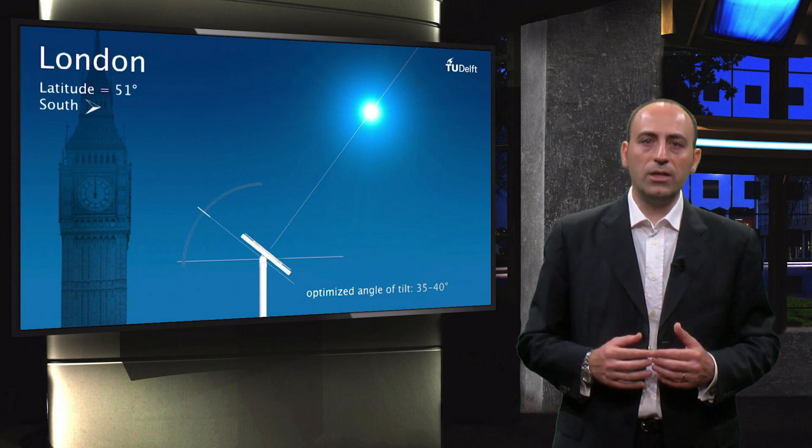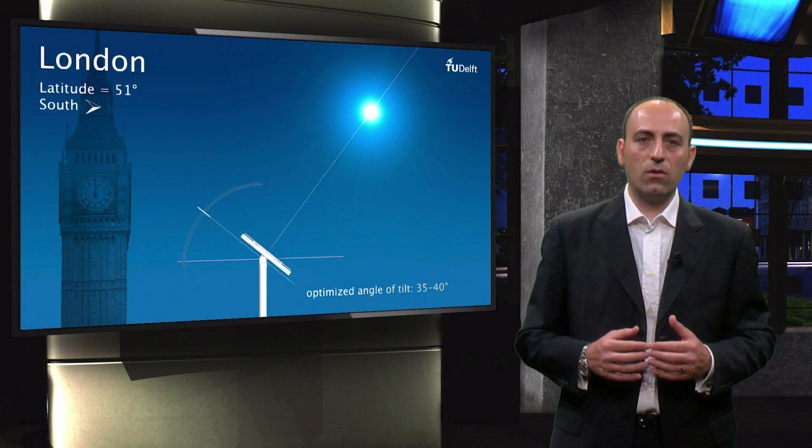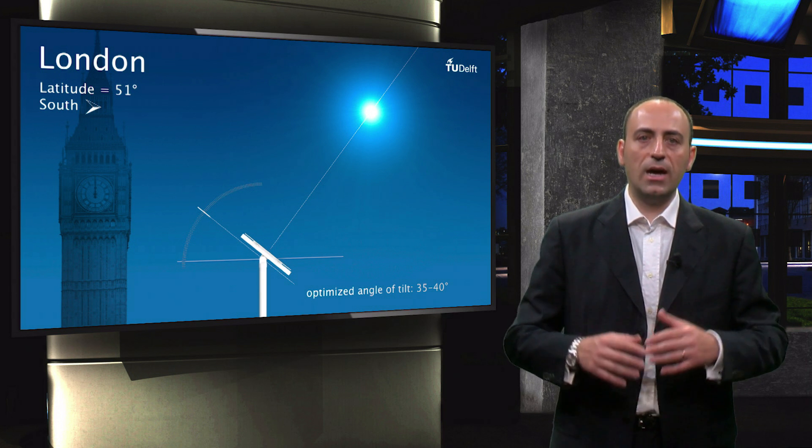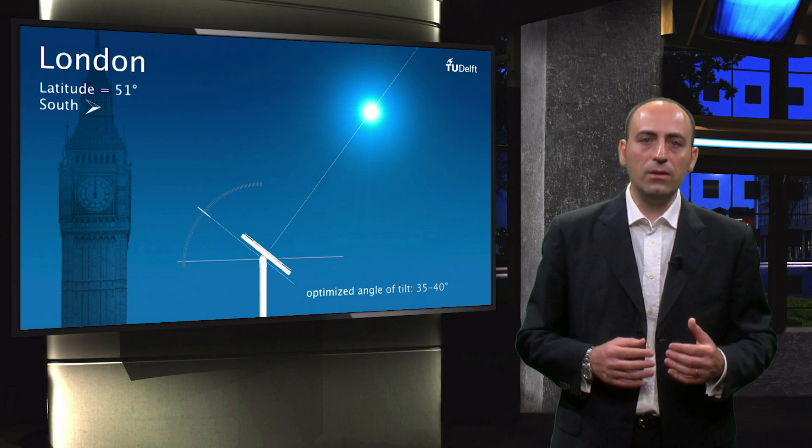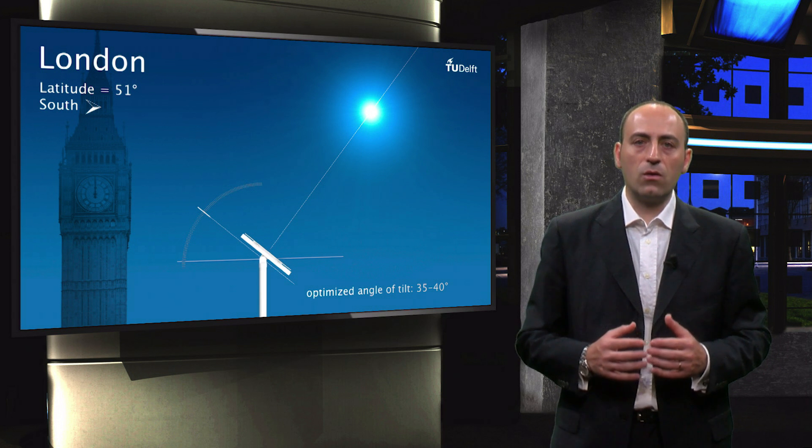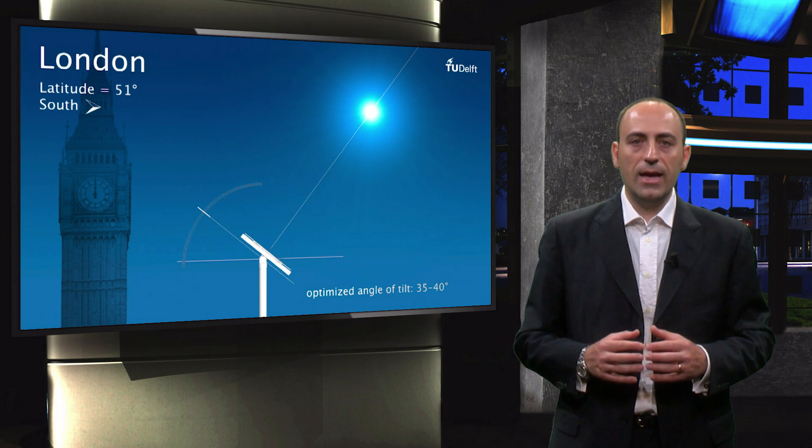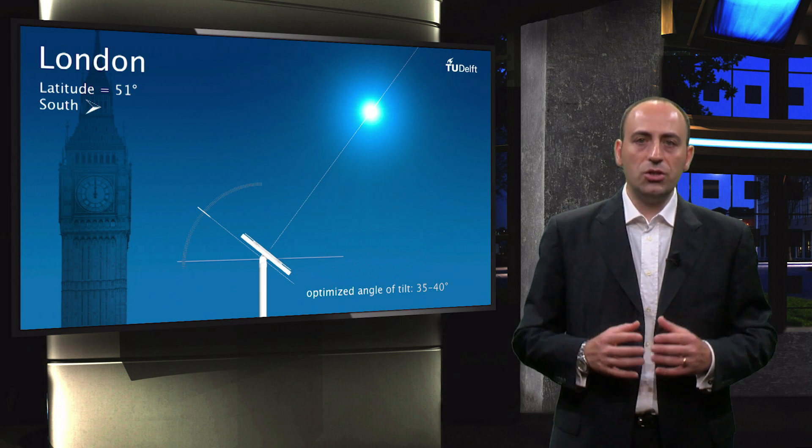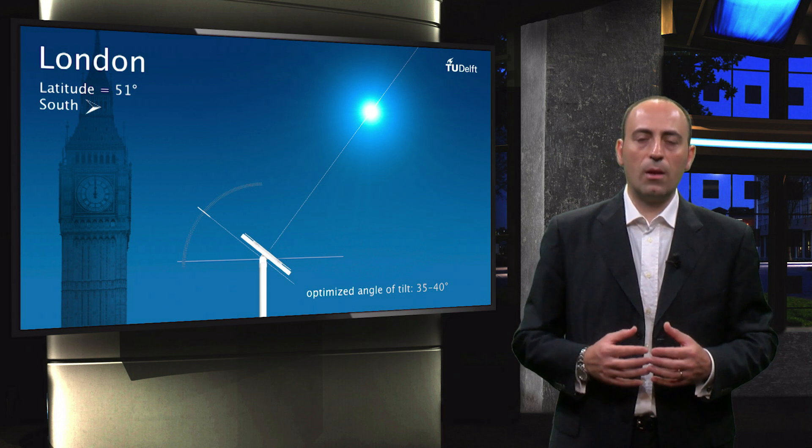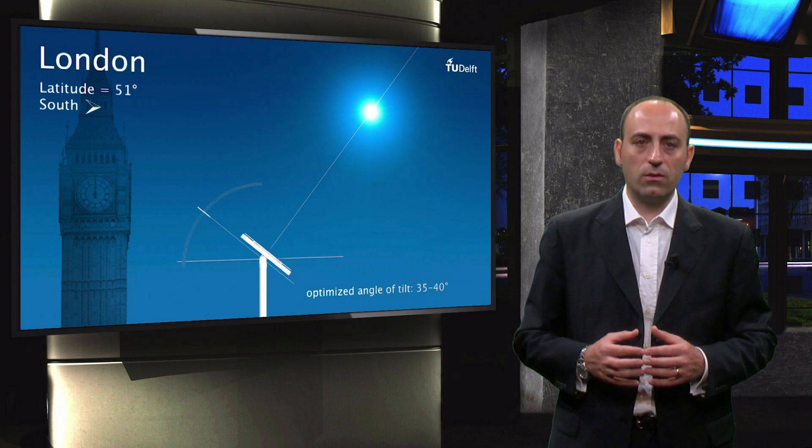At the end of this simulation, the best fixed tilt angle is computed to optimize the annual energy yield. For London, this optimal tilt angle corresponds to somewhere between 35 and 40 degrees. As the animation points out, however, the energy yield could be even higher for solar panels with an adjustable tilt angle.